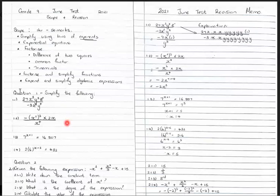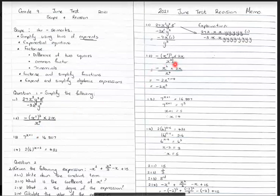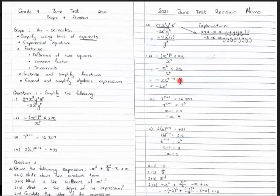Question 1.2: you have negative (x squared) all cubed, times by 2x, divided by x to the power 4. We simplify the brackets first — an exponent raised to an exponent means multiply: 2 times 3 gives 6. So we have negative x to the power 6 times 2x, divided by x to the power 4. The coefficient gives negative 2, and combining exponents of x: 6 plus 1 gives 7. Dividing by x to the power 4 means subtracting 4, leaving negative 2x cubed.